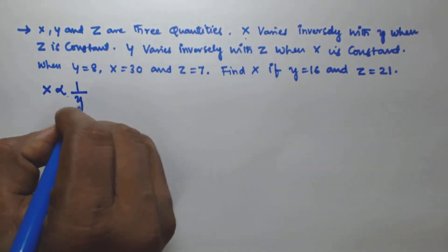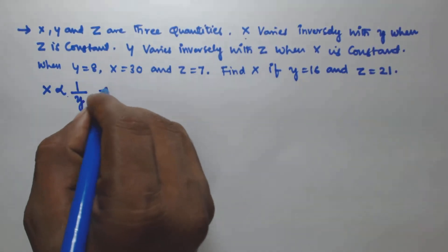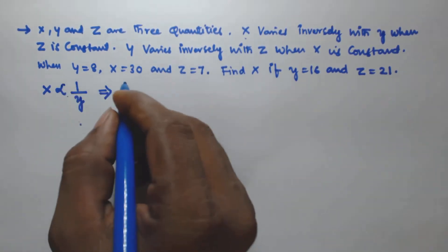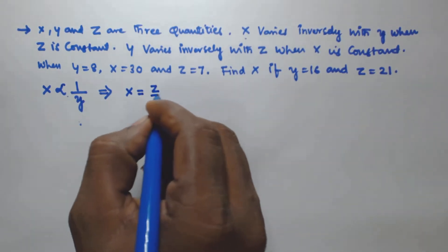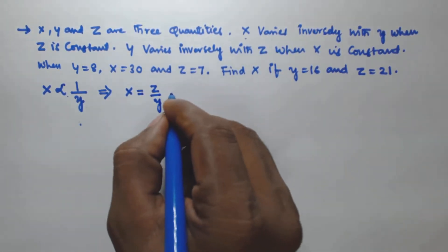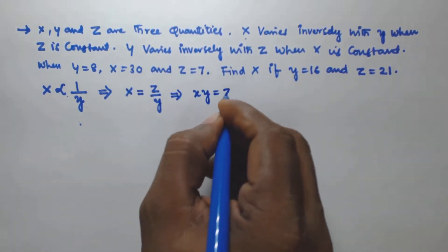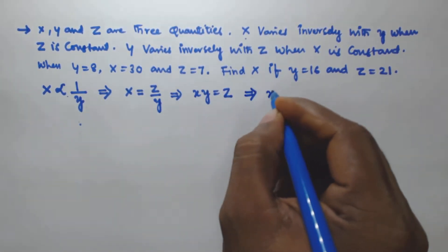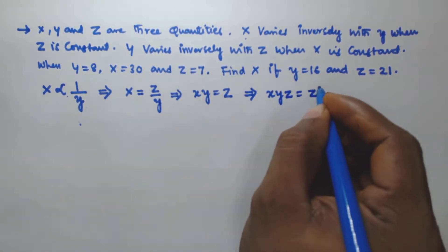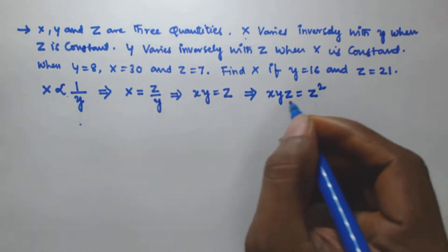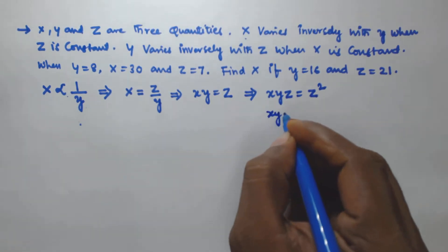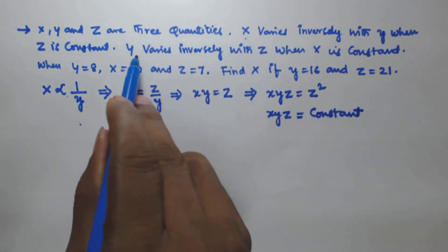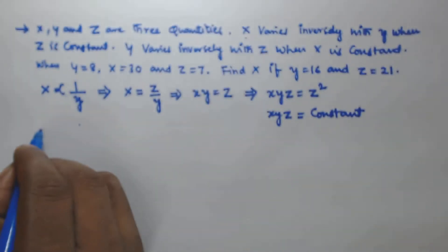In the first case, x varies inversely with y when z is constant. To remove this inversely proportional, we introduce the constant z, so x is equal to z divided by y. This implies x times y is equal to z, where z is a constant. Now multiplying both sides by z, we get x·y·z is equal to z squared. Since z is constant, z squared is also constant, so x·y·z equals a constant.